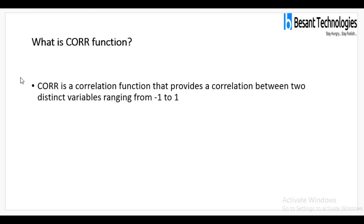What is the COR function? COR is a correlation function that provides the correlation between two distinct variables ranging from minus 1 to 1. Minus 1 represents negatively correlated, and 1 represents positively correlated. In between values: minus 0.25 is a weak negative correlation, minus 0.75 is intermediate negative correlation, 0 is no correlation, 0.25 is weak positive correlation, and 0.75 is intermediate positive correlation.